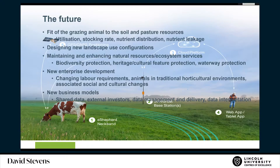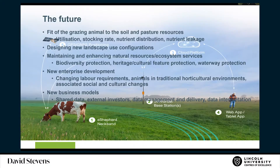Then we can start to think about designing new landscape configurations, which becomes decidedly important when we start to think about transformation. In that space, we're looking at things like enhancing the natural ecosystem services, bioprotection. We've been talking with some of our major cities about cultural and heritage protections on some of our national farms. And also the opportunity to separate animals from people using virtual fencing, so that we can have more recreational use in those landscapes.